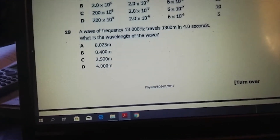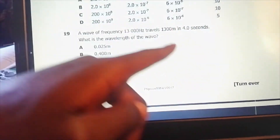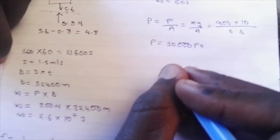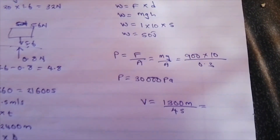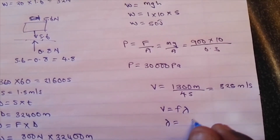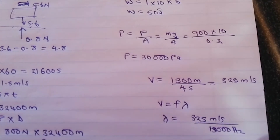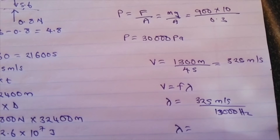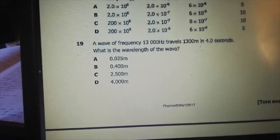A wave of frequency 13,000 Hz travels 1,300 meters in 4 seconds. What is the wavelength? First find speed: V equals distance over time equals 1,300 over 4 equals 325 meters per second. Then using the wave equation V equals F times lambda, wavelength equals 325 divided by 13,000, which equals 0.025 meters. The answer is A: 0.025 meters.